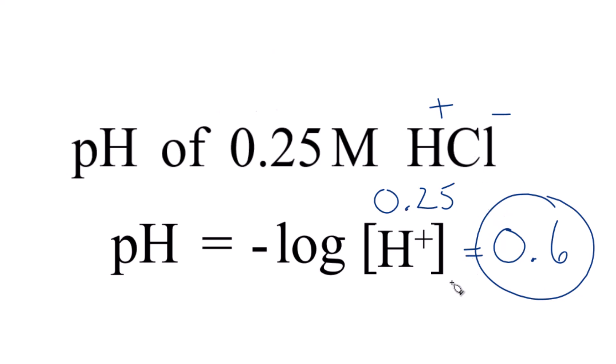This is Dr. B looking at the pH of a 0.25 molar solution of HCl. The answer? 0.6. Thanks for watching.